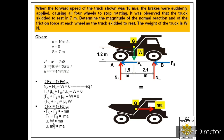Substituting the values: acceleration = 7.14 m/s² and g = 9.81 m/s², we get the coefficient of kinetic friction μk = 7.14 / 9.81 = 0.728. So from the first two equations, we have obtained the coefficient of kinetic friction.